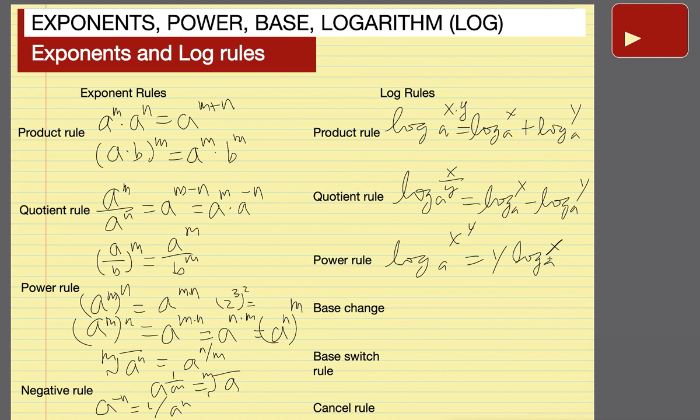Base change rule: the base a log of x is equal to the base c log of x divided by the base c log of a. C is random, you can pick whatever you want.